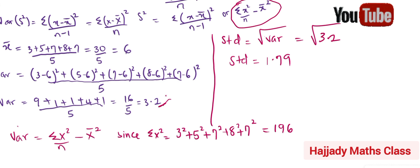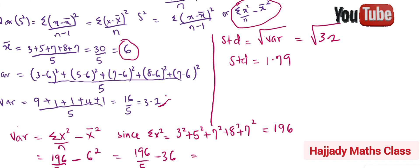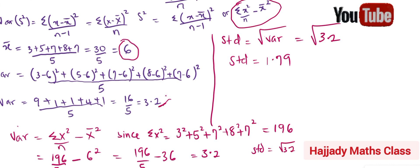Now our variance is: summation x² over n, minus x̄ squared = 196 over 5, minus 6 squared = 196/5 minus 36, which gives 3.2. Calculating the standard deviation, it is still the square root of 3.2, which equals 1.79. Both methods give the same answer.